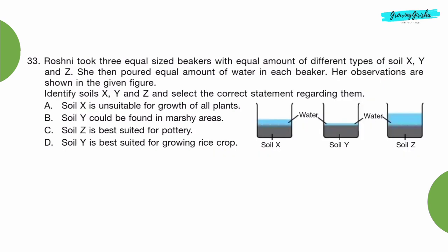Question 33: Roshni took three equal sized beakers with equal amount of different types of soil, X, Y and Z. She then poured equal amount of water in each beaker. Her observations are shown in the given figure. Identify soils X, Y and Z and select the correct statement regarding them. Option C: Soil Z is best suited for pottery.